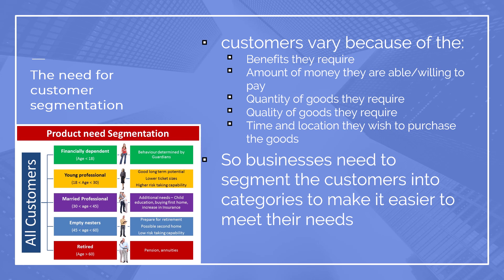The amount of money you're able or willing to pay can have a huge impact — if you know what your customers are like and how much money they earn, you know how much you could charge for your products. The quantity of goods required makes a difference, as some people might buy lots of items and others only one. Quality makes a big difference too — a businessman looking for a suit might need a top-quality suit for important meetings. Finally, time and location makes a huge difference, as many people want to buy online and others in store.